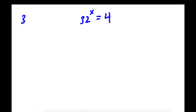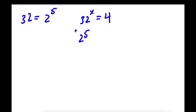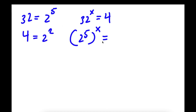So 32 is actually equal to 2 to the power of 5. So now I can rewrite 32 to the power of x by substituting in 2 to the power of 5 for 32. So now I have 2 to the power of 5 to the power of x is equal to — now 4, this is equal to 2 squared.